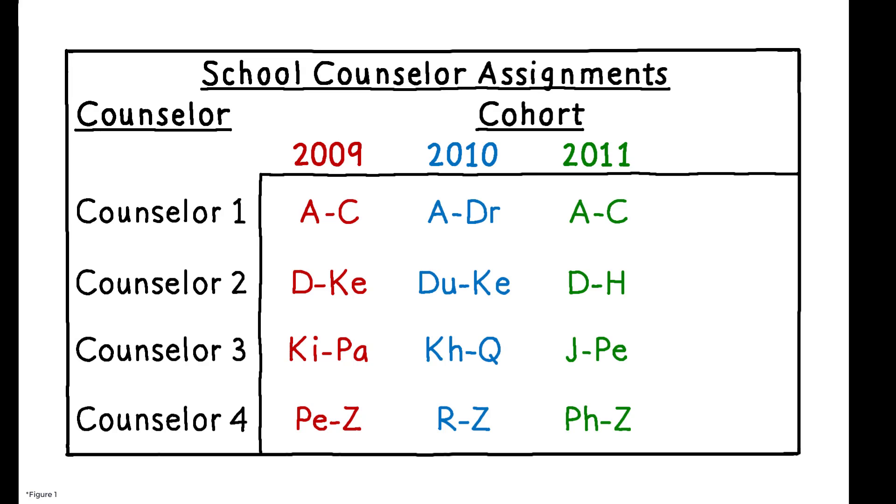Students in other cohorts are also assigned to the same four counselors, but because the distribution of last names and the number of students vary across cohorts, the assignment cutoffs also vary across cohorts.